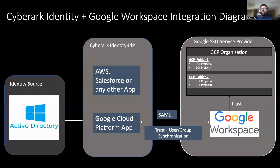In terms of the integration diagram, this is how the entire integration is going to look like. Our identity source is going to be Active Directory — that's where my users and groups are going to be. Then we have Cybrox identity, where I have a couple of apps. For the current demonstration, we will be focusing upon a Google Cloud Platform application. Then I set up Google Workspace, with a couple of GCP projects and so on. For the integration, we will be leveraging SAML-based authentication. For provisioning, we will be provisioning AD users and groups all the way to Google Workspace.